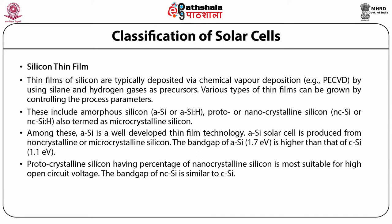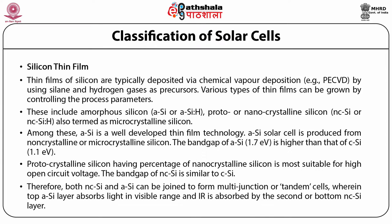Protocrystalline silicon, having a percentage of nanocrystalline silicon, is more suitable for high open circuit voltage. The band gap of nanocrystalline silicon is similar to C-silicon. Therefore, both nanocrystalline silicon and a-Si can be joined to form multi-junction or tandem cells, wherein the top a-Si layer absorbs light in the visible range and IR is absorbed by the bottom nanocrystalline silicon layer.